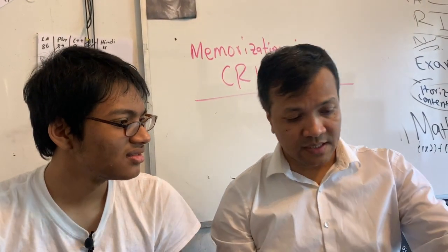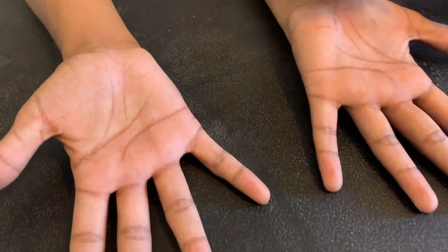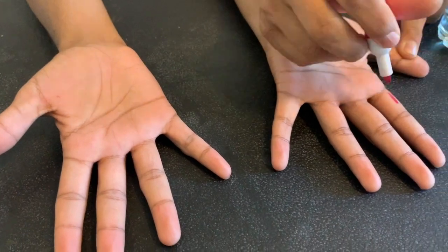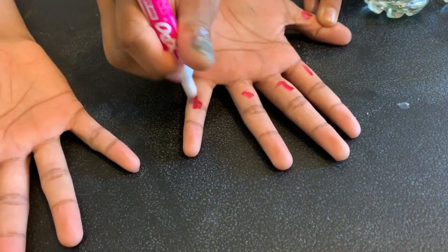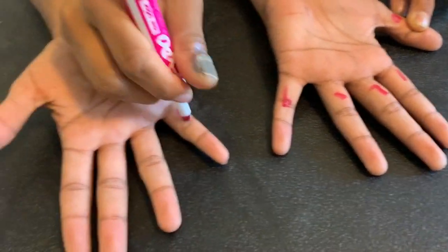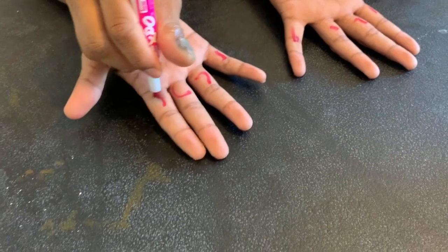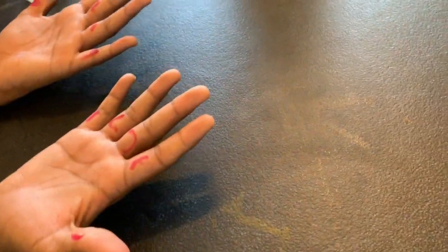Give me your hand. How many fingers do you have? 10 fingers. All right. So 0, 1, 2, 3, 4, 5, 6, 7, 8, 9. So how many digits do we have?